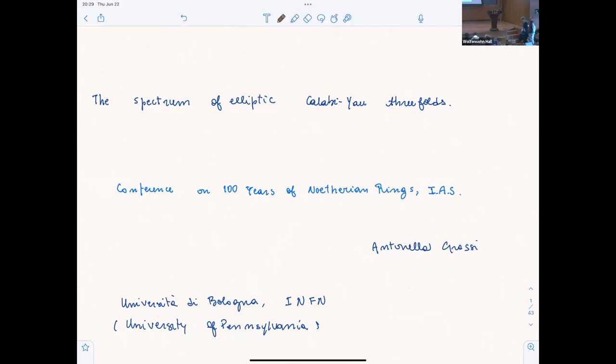Okay everyone, our first talk of the afternoon will be by Anjanela Grassi, and she will tell us about the spectrum of elliptic Calabi-Yau threefolds. Thank you, thank you for the invitation and thank you to the organizers for the wonderful organization.